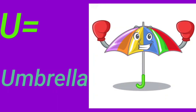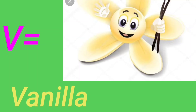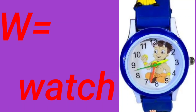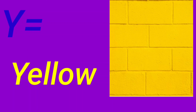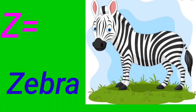U for Umbrella. V for Vanilla. W for Watts. X for Xylophone. Y for Yellow. Z for Zebra. Bye-bye.